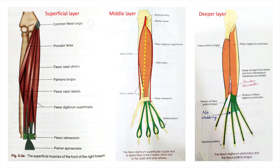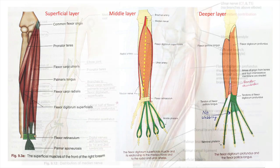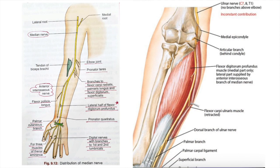The middle layer is formed by flexor digitorum superficialis, a muscle which takes origin from all three bones — humerus, radius, and ulna — and also from the common flexor origin. The deeper layer has three muscles: flexor pollicis longus, flexor digitorum profundus, and pronator quadratus.